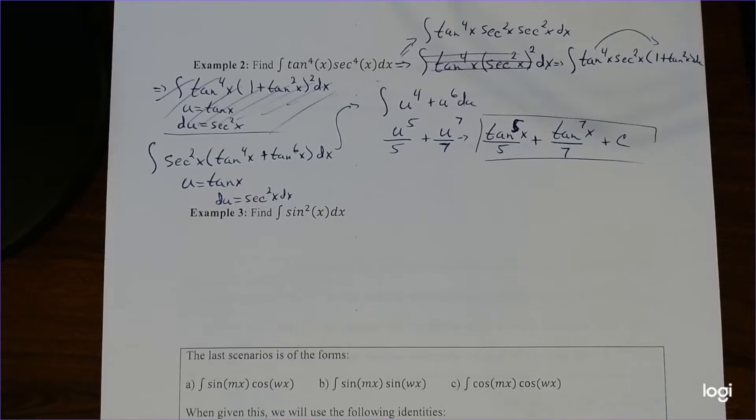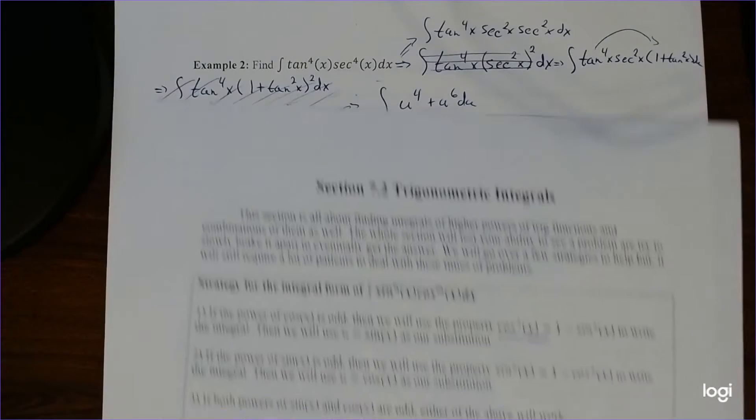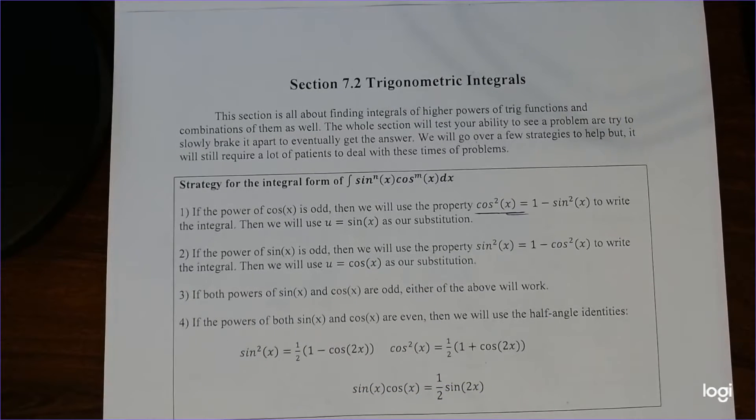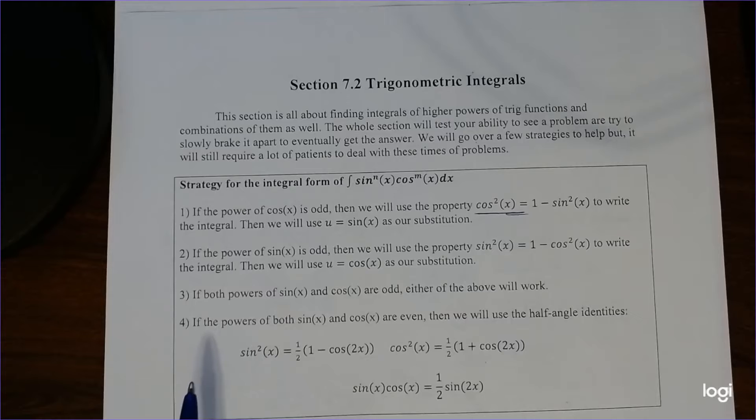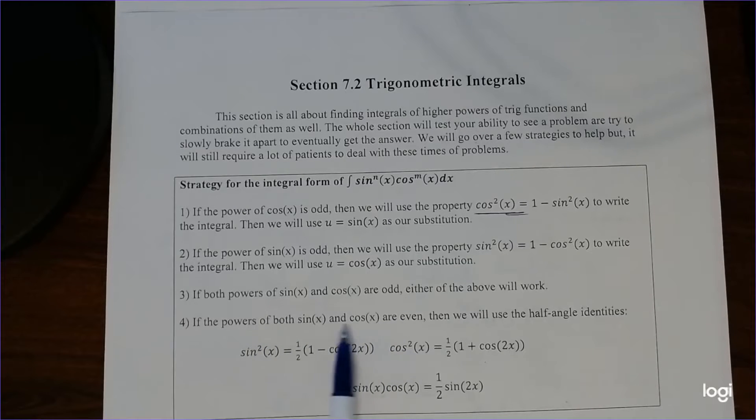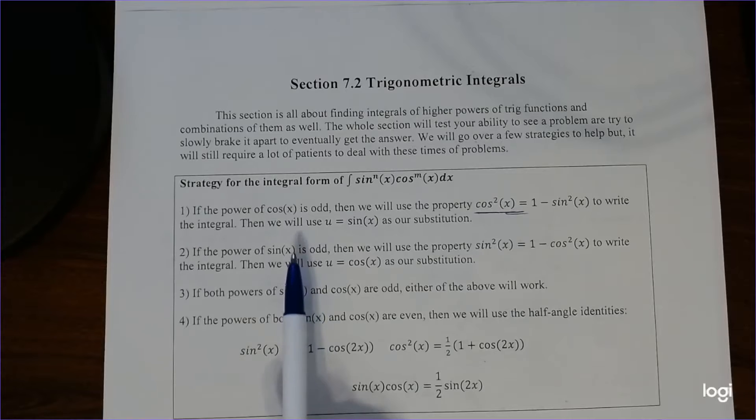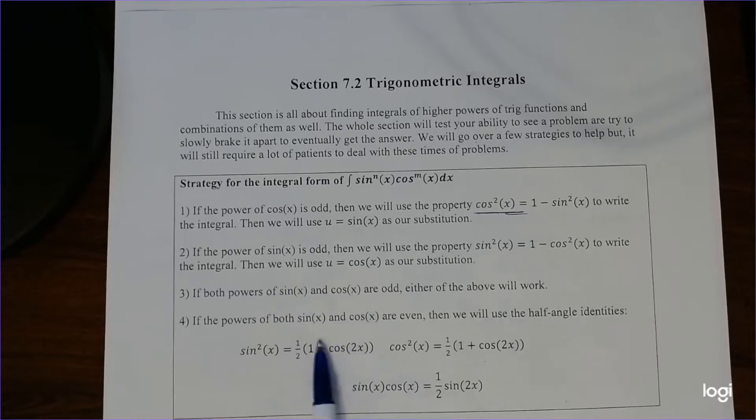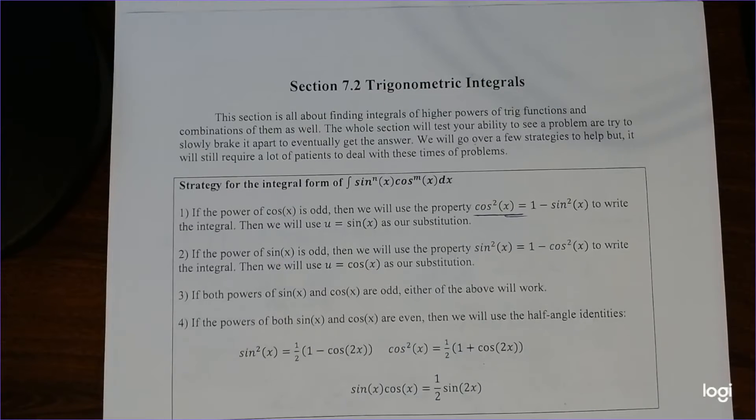So we're just going to follow the same rules as I did earlier. So the power of sine is even. So that means we're going to be using both power of sine and cosine even. Well, you don't have cosine, but that's the only case where sine is even. We're going to be using one of these three properties to help ourselves out. And again, sometimes this will work, sometimes that will work. It just depends on what's given to us.